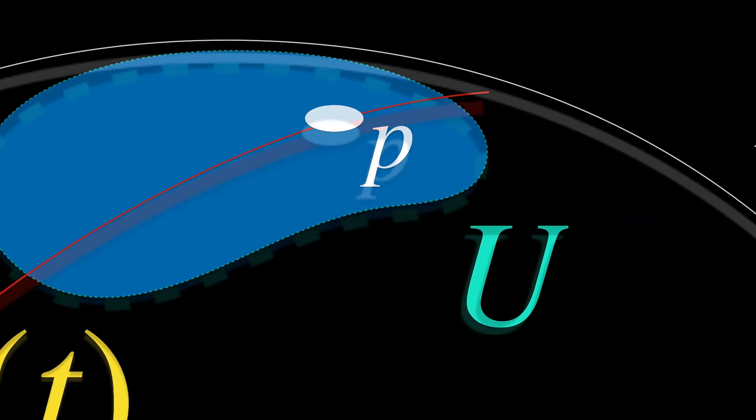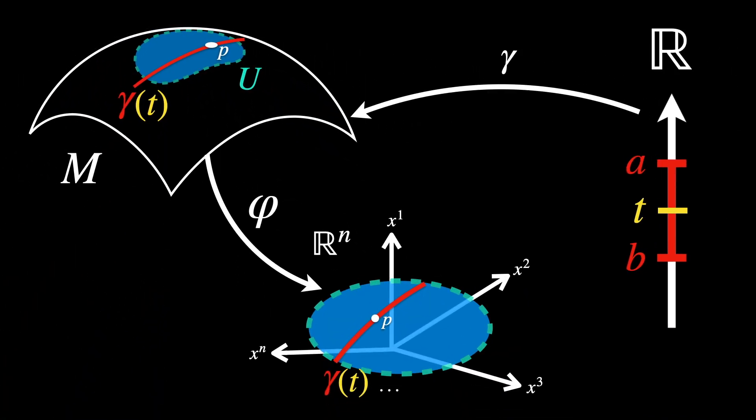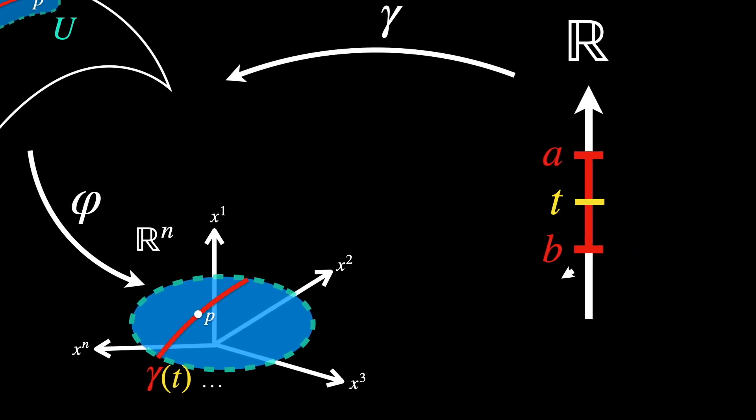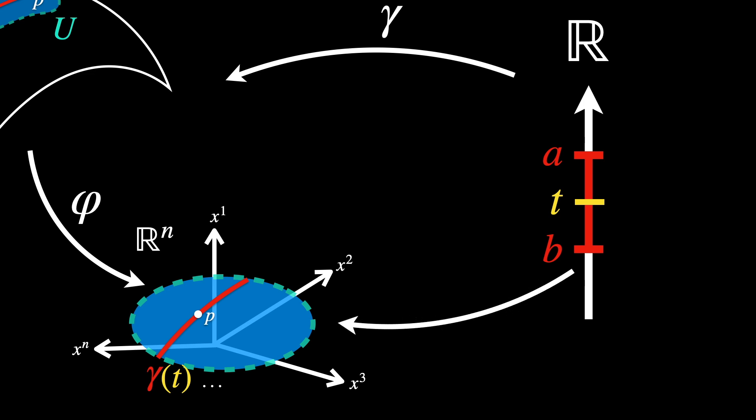To calculate the velocity of the curve at P, we need to work in a Euclidean space Rn, where derivatives are well defined. To do this, we combine the chart phi and the curve gamma of T. The composition phi composed with gamma maps the curve on the manifold to a curve in Rn.